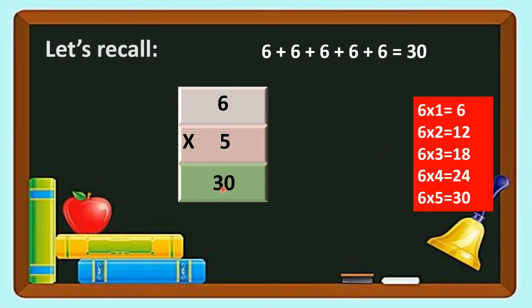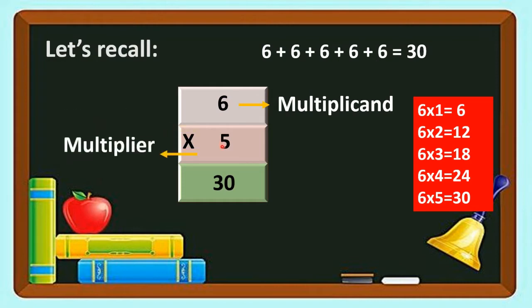Now students, in multiplication — 6 into 5 — we multiply the first number 6; it is the multiplicand. We multiply by the second number 5; it is the multiplier. The answer 30 is known as the product.